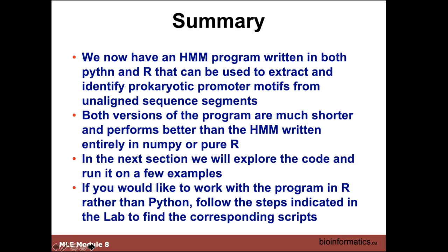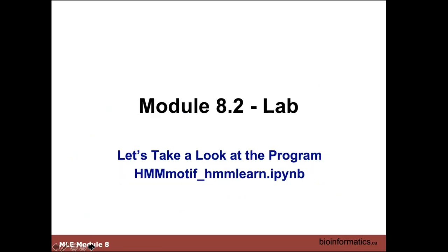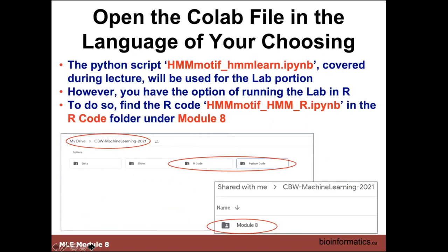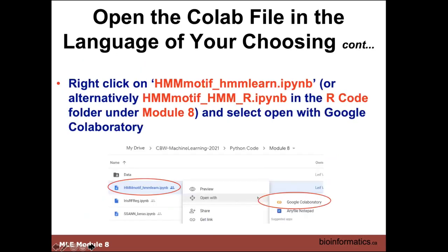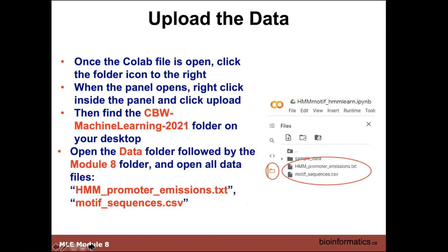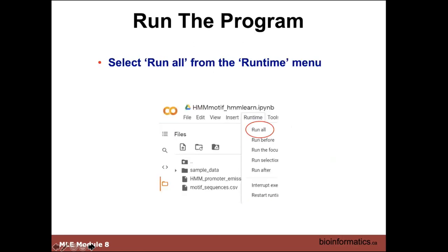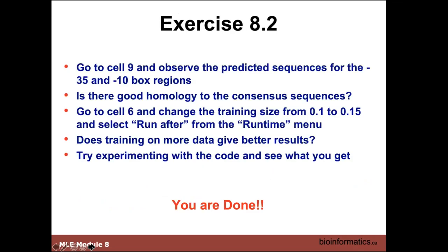This is wrapping up for the lab — we can use maybe the next 10 or 15 minutes for people to run through it. Go to module 8, open things up in either Python or R. In this case you want to upload some of the data files: there are two — emissions.txt and the promoter emissions and the motif sequences. You can run it the same way you've always done, then play around with the different cells to check things out.